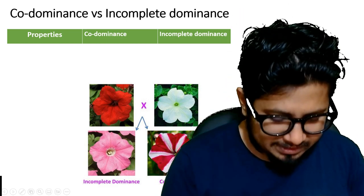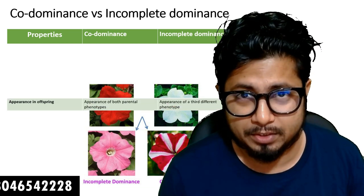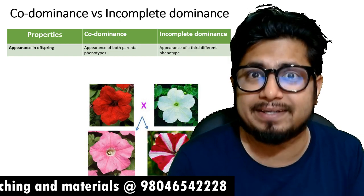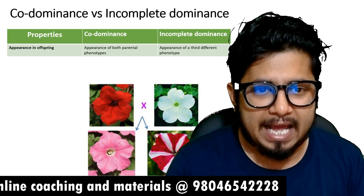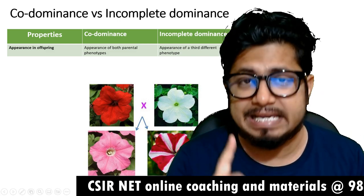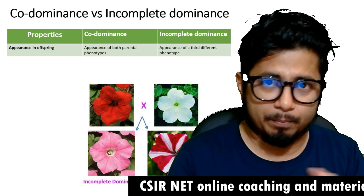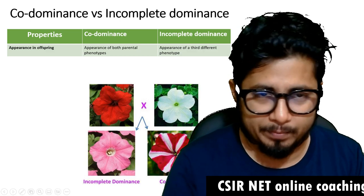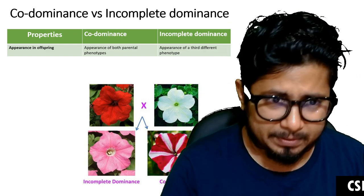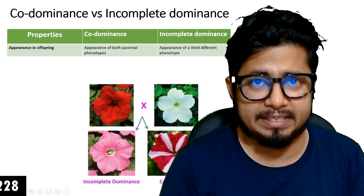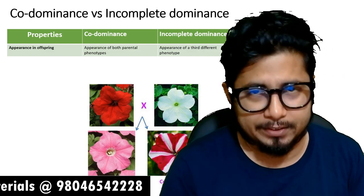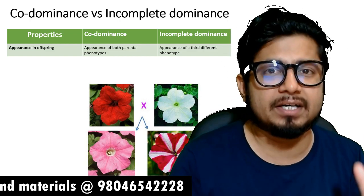Let's understand the definition between co-dominance and incomplete dominance. The definition is based on appearance in offspring. In co-dominance, the appearance of both parental phenotypes are visible. As you can see in this picture of co-dominance, we are seeing white color as well as red color prominently in a single flower — both parents' colors are visible. In incomplete dominance, the appearance of a completely different color is visible. In this case, the flower color is pink — a mixture of red and white. We are not seeing red or white; we are seeing a pink, third different phenotype.